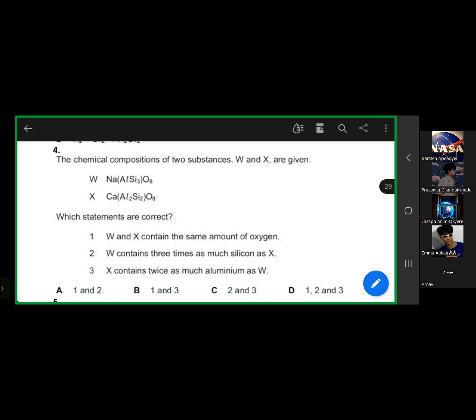Which statements are correct? Okay, what do you think? Statement one says W and X contain the same amount of oxygen. Is it true? Yes, oxygen is eight in W, oxygen is eight in X, so that one is a true statement. Statement two: W contains three times as much silicon as X. That's not a true statement. Silicon is two in W, it's three in X. For it to be three times, the silicon in W should be six. So two is wrong.